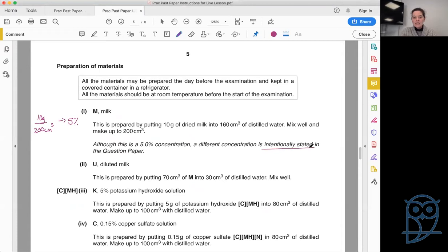Your simple dilution is a lot easier to do with 1% than it is with 5%, so often they will do things like this in the background that you are completely unaware of. M is actually 5%. So how do they make U? U is prepared by putting 70 centimeters cubed of M into 30 centimeters cubed of distilled water. So we've got 0.7 times M, which gives us a 3.5% concentration.